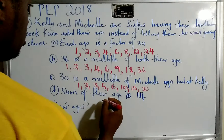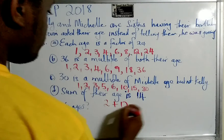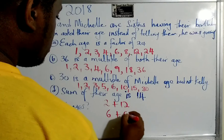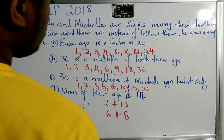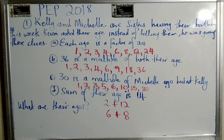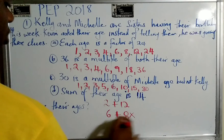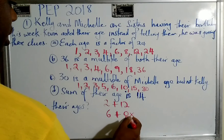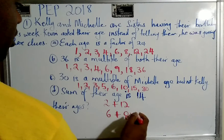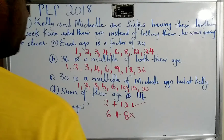We could look at pairs like 2 plus 12, or 6 plus 8 — those are the only two combinations that add up to the target. Now, 36 is a multiple of both their ages. But 36 is not a multiple of 8, so we can eliminate the pair 6 and 8. That leaves us with the answer.